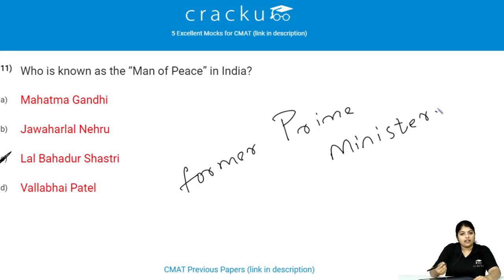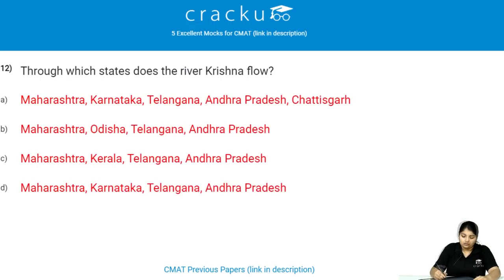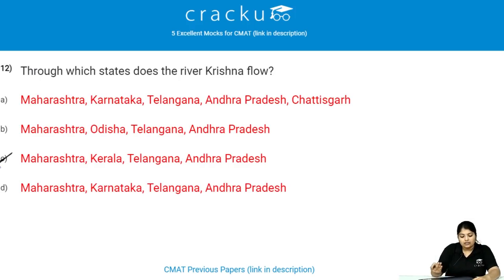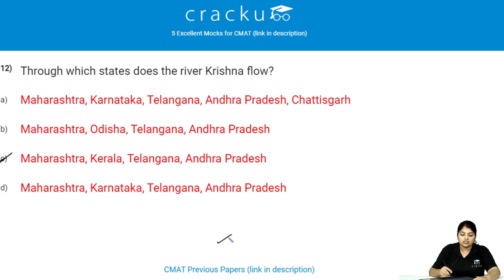Through which states does the river Krishna flow? The river Krishna flows through Maharashtra, Karnataka, Telangana and Andhra Pradesh. The origin of the river Krishna is at Mahabaleshwar.